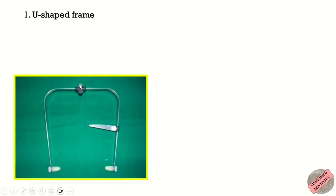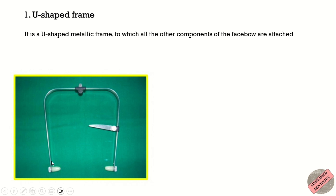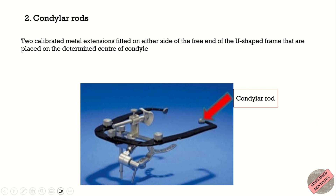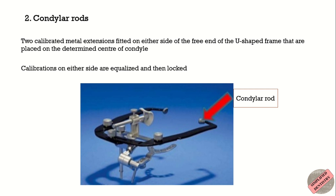The U-shaped frame is a U-shaped metallic frame to which all the other components of the face bow are attached. It extends from the TMJ of one side to the TMJ of the other side, at least two to three inches anterior to the face to avoid contact. The condylar rods are two calibrated metal extensions fitted on either side of the free end of the U-shaped frame, placed on the determined center of the condyle. The calibrations on either side are equalized and then locked.